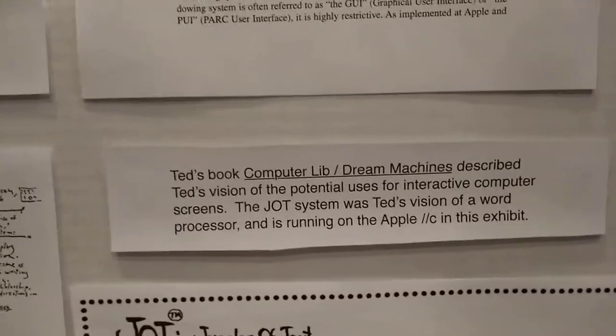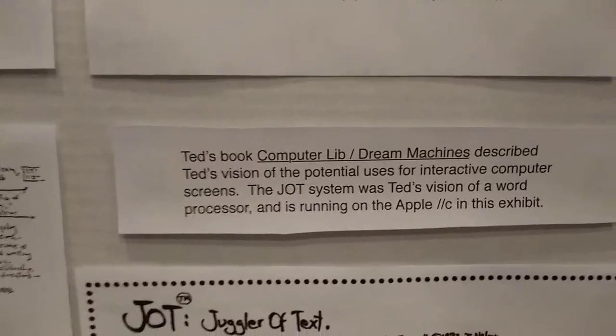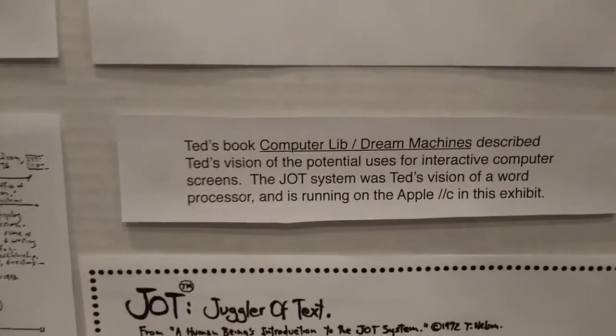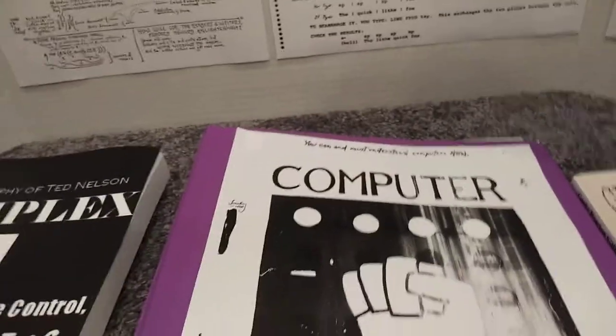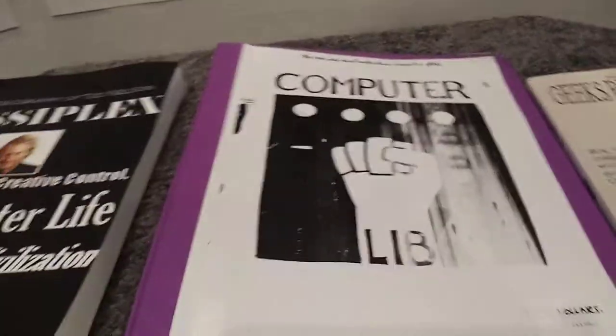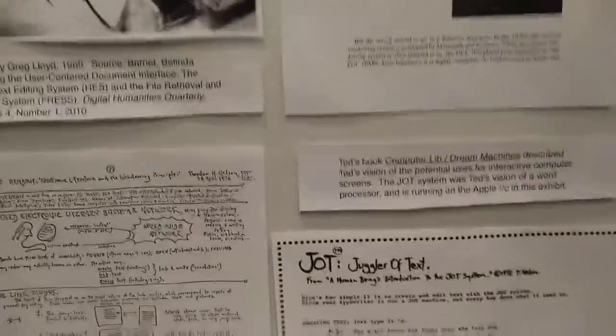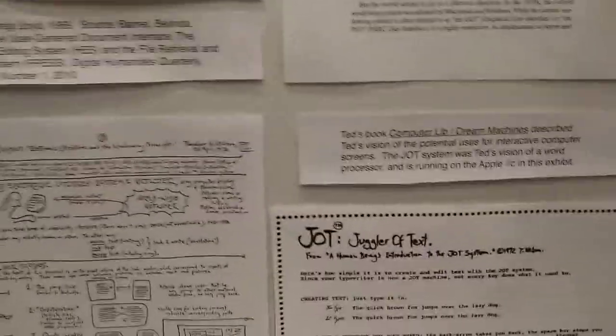Then he put out the book Computer Lib and Dream Machines. I don't own it, but I'm going to make a binder that shows the cover of Computer Lib and, on the back side, Dream Machines. It was very creative — you have to turn the book upside down to read it the other way to get Dream Machines.